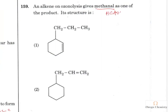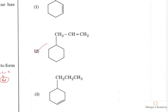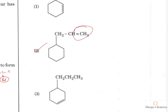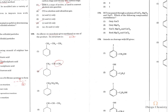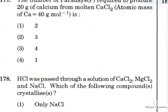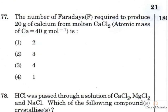Question 159: An alkene on ozonolysis gives methanal (formaldehyde). If you get methanal upon ozonolysis, that indicates you have a terminal alkene. The correct compound is the only one with a terminal alkene — it is the only compound that will give methanal.